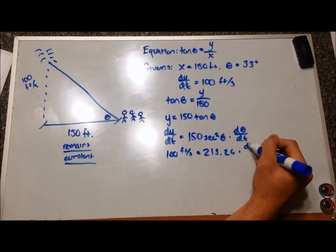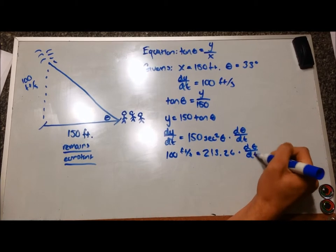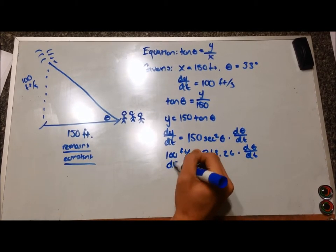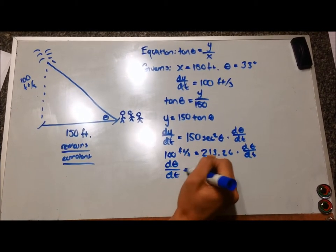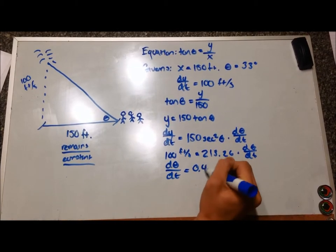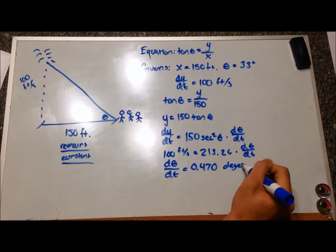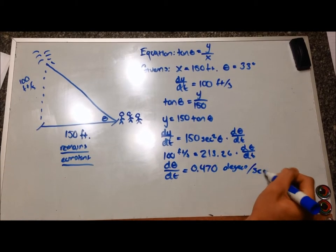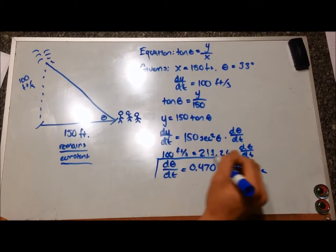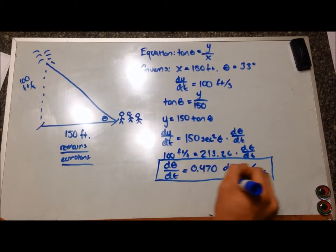Plug in dy/dt because we know it's constant, and plug in 33 degrees for theta because we know that's what we're looking for here, too. When everything is carried out, d theta/dt should solve for 0.470 degrees per second.